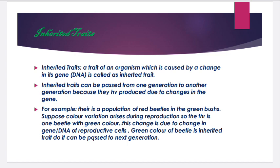We can take an example. For example, when we talk about beetles — there is a red population of beetles in green bushes. But when their offspring came, due to reproduction, some green beetles appeared. Due to reproduction, variation took place in their genes, and because of that, the color changed in the beetles. This trait, which is due to change in the genes, can be transmitted from parent to offspring — so in future generations there may be green beetles as well, because these green beetles arose due to genetic variation.